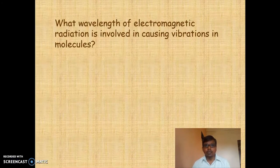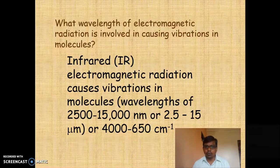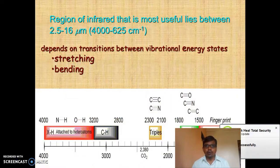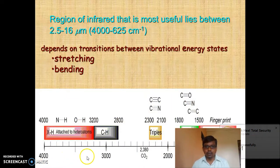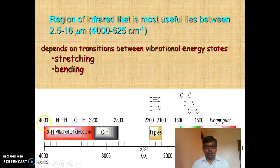What wavelength of electromagnetic radiation is involved in causing vibration in molecules? About 2500 to 15000 nanometers is required to vibrate the bonds present in atomic molecules. If you convert that to wavenumbers, it is about 4000 to 650 cm⁻¹. This region is divided into two parts: one is the functional group region and another is the fingerprint region. The functional group region lies from 4000 to 1500 cm⁻¹, while the fingerprint region lies from 1500 to 650 cm⁻¹.